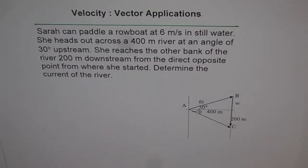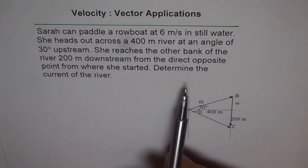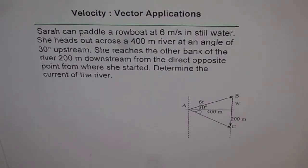We are given Sarah's direction, the velocity, the width of the river, and even the distance she lands up on the other side. We need to find the current of the river. I have already given you the vector diagram. Let's try to understand it — you need to actually read the question and draw it.